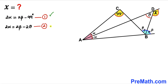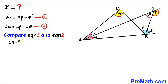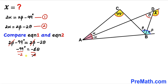Now we have Equation 1: 2 alpha equals 2 beta minus 99 degrees, and Equation 2: 2 alpha equals 2 beta minus 2 theta. Since the left-hand sides are identical, we can equate the right-hand sides: 2 beta minus 99 degrees equals 2 beta minus 2 theta. The 2 beta terms cancel, leaving negative 99 degrees equals negative 2 theta. Dividing both sides by negative 2, we get theta equals 49.5 degrees.